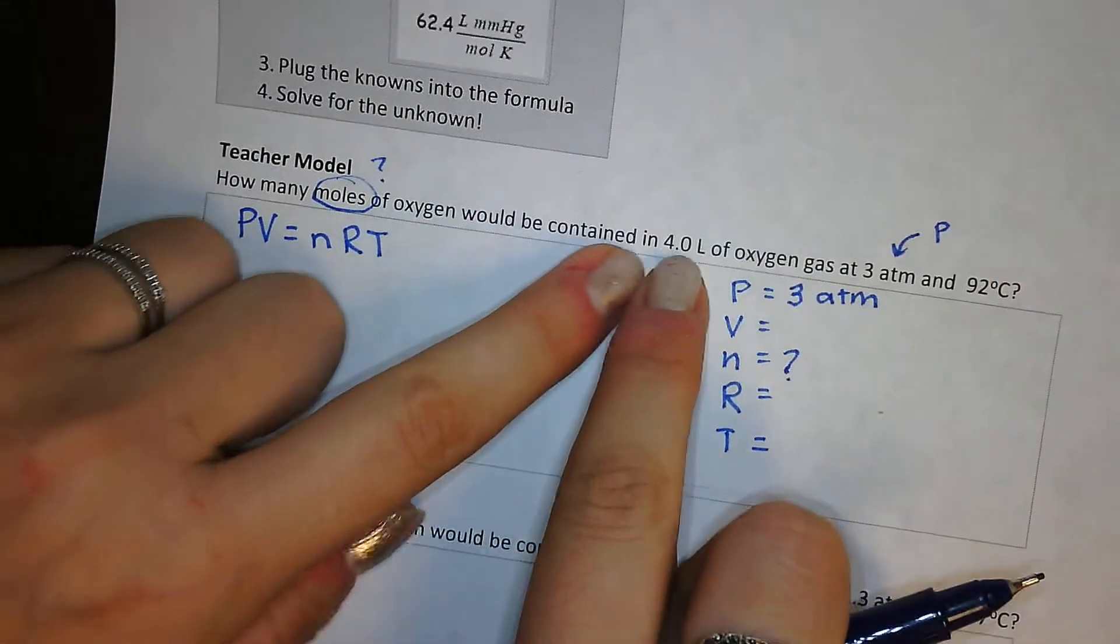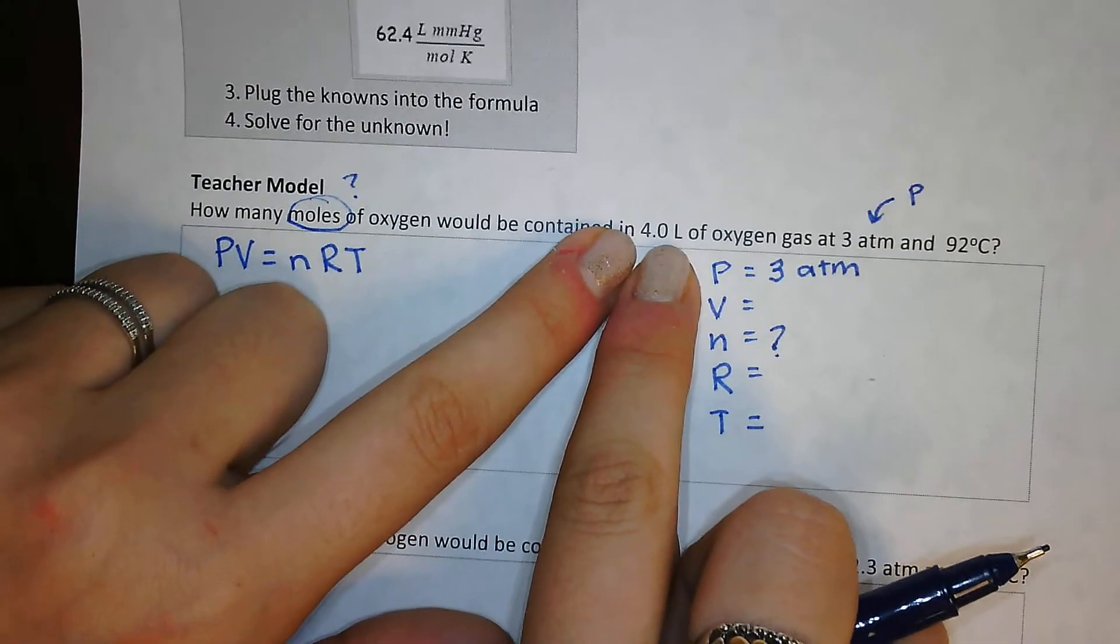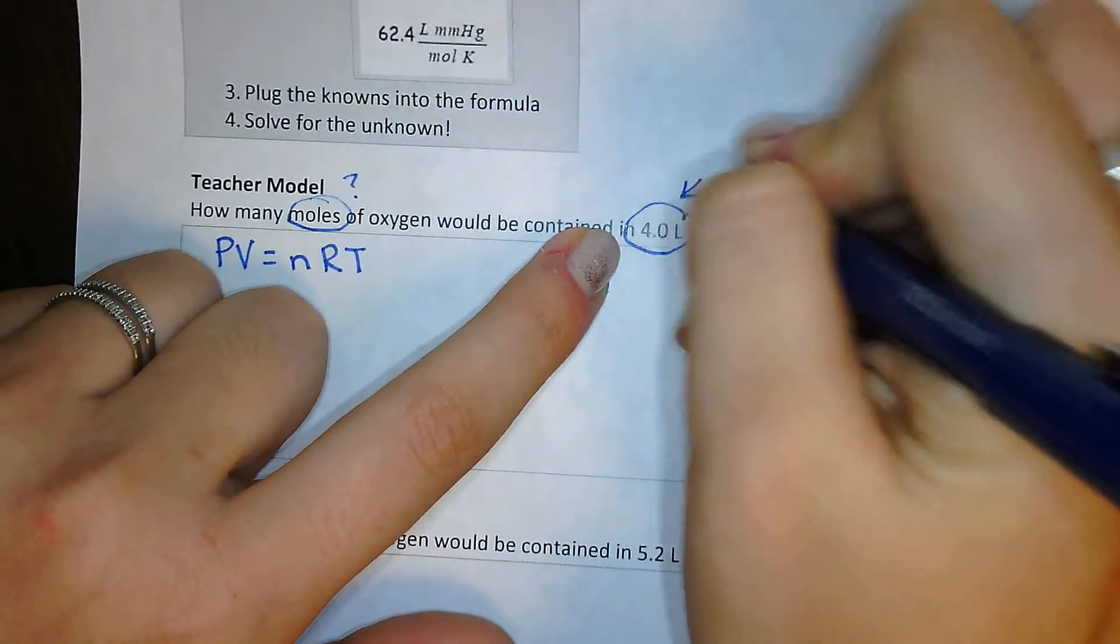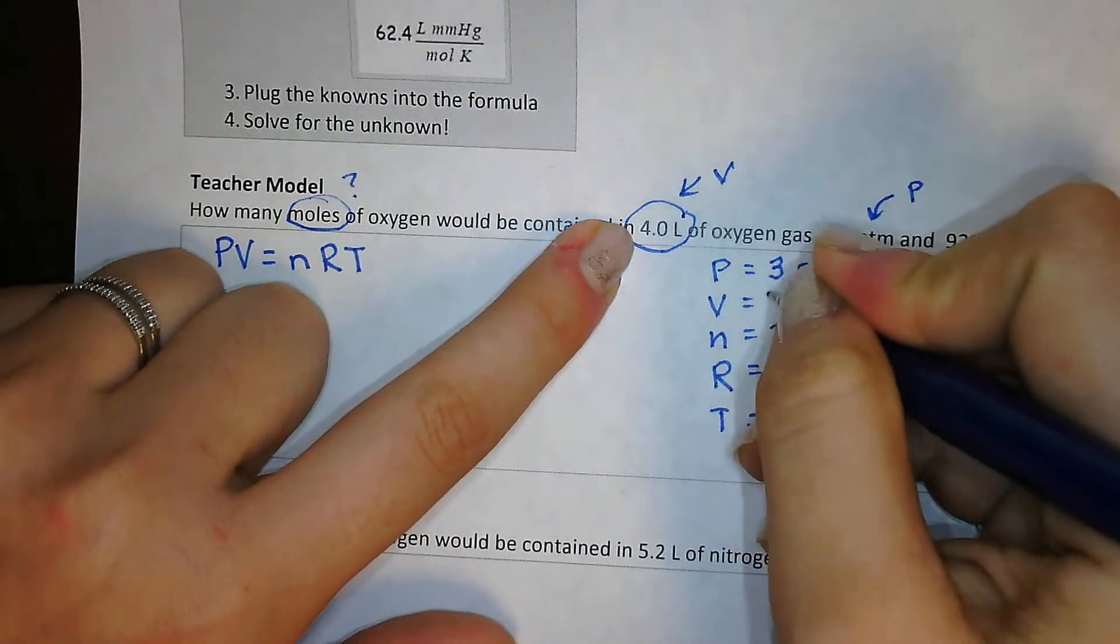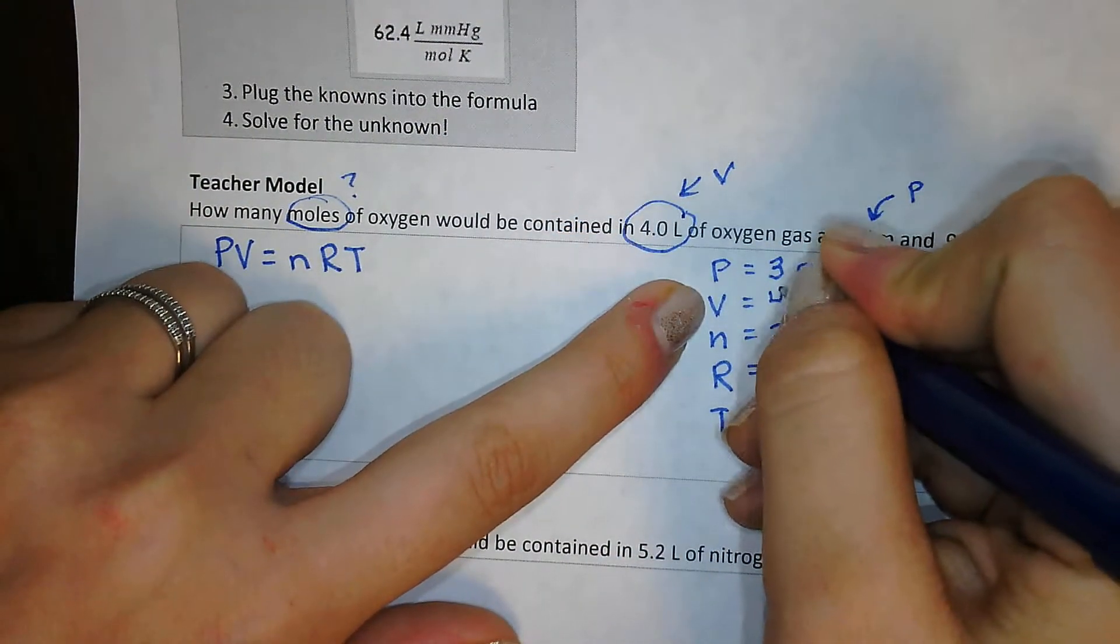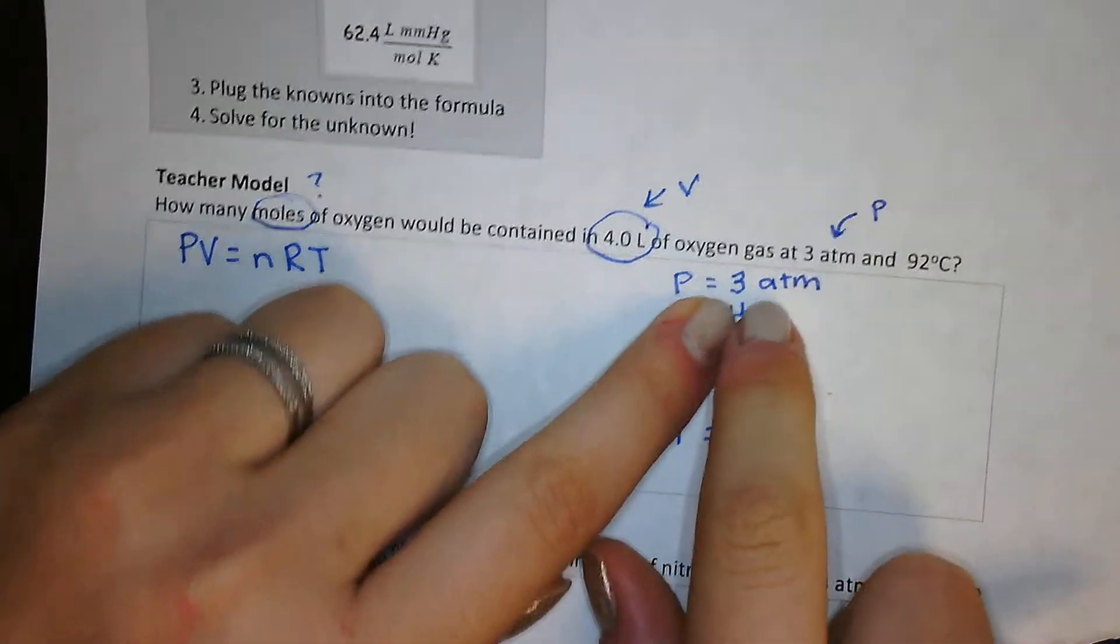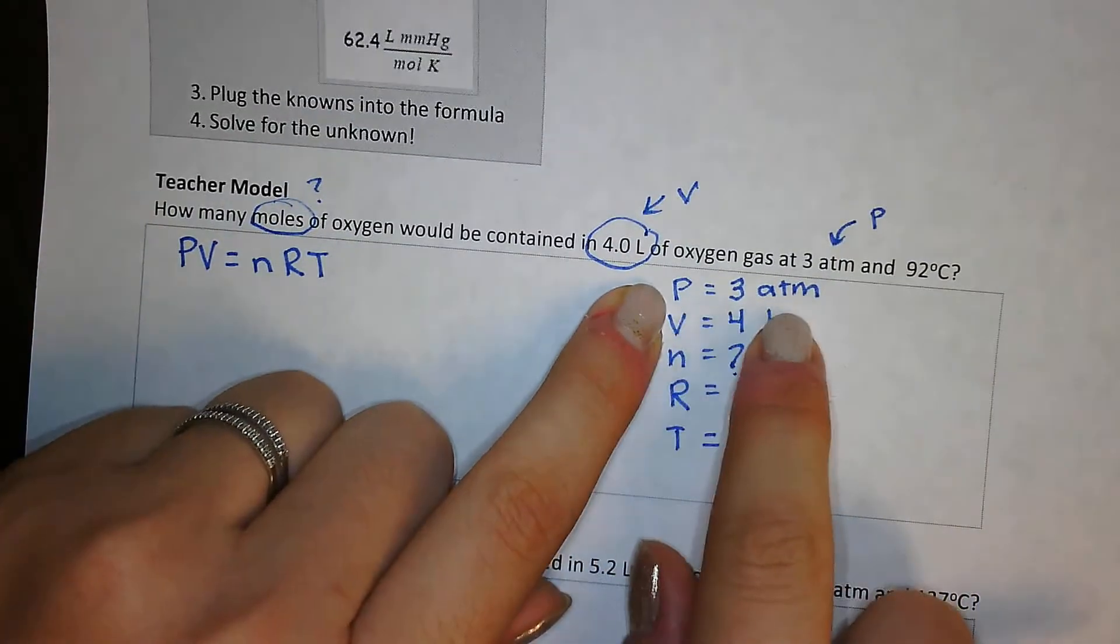Of oxygen would be contained in 4 liters. In 4 liters, that is volume right here. So volume is my V. That is 4 liters. Of oxygen gas at 3 atm. So that is my pressure. I wrote it here as 3 atm.